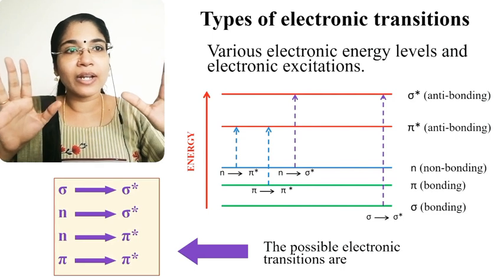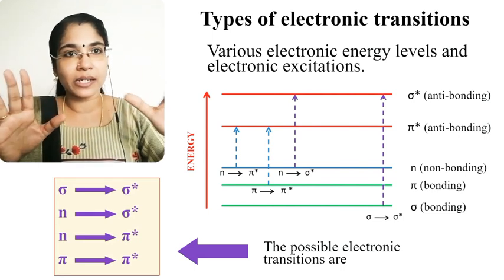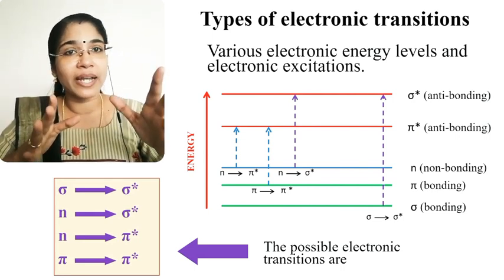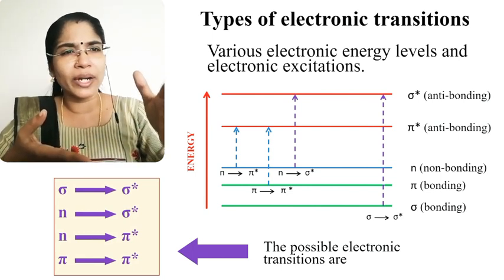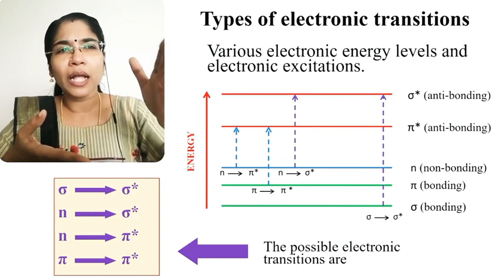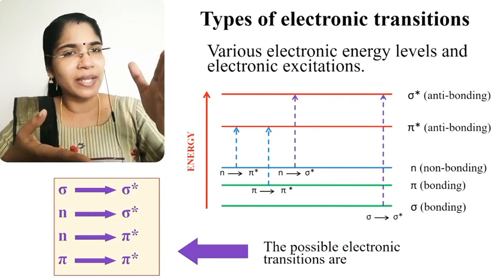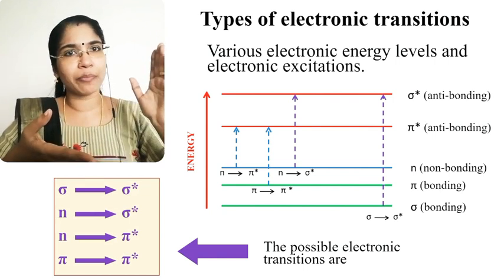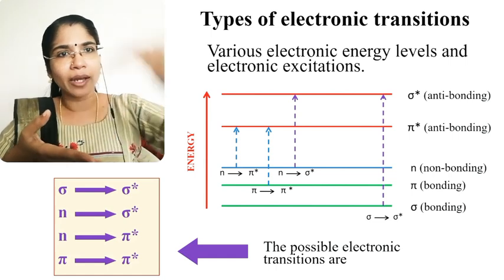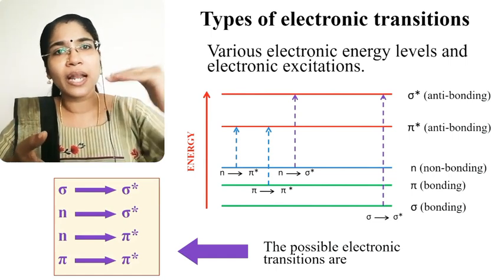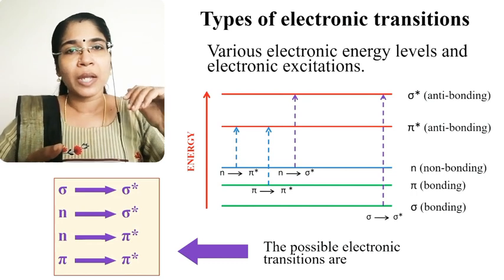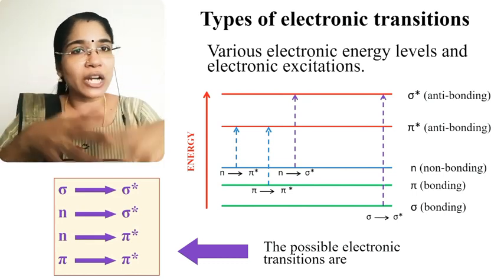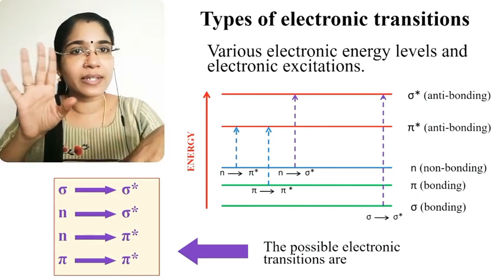Looking at the energy level diagram: the order from lowest to highest energy is sigma bonding, pi bonding, non-bonding, then pi star anti-bonding, and sigma star anti-bonding. There are four possible electronic transitions.